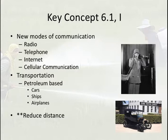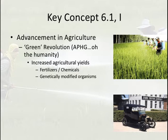Petroleum-based transportation is now the way of the world. Cars, ships, and airplanes all use fuel derived from oil, which makes people move a lot faster and get to many different places. Additionally, there are advancements in agriculture. You get the so-called Green Revolution, which harkens back to AP Human Geography — this is a movement in which agricultural yields are increased throughout the globe.